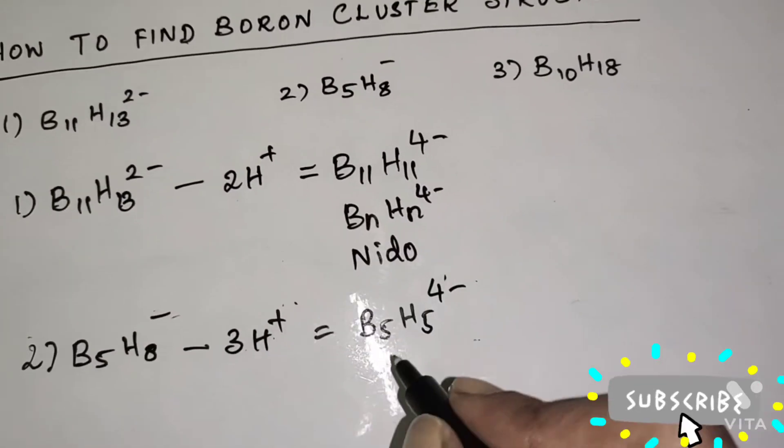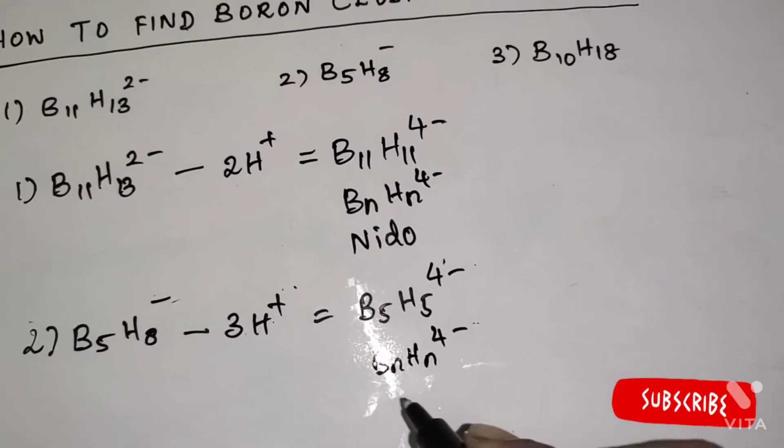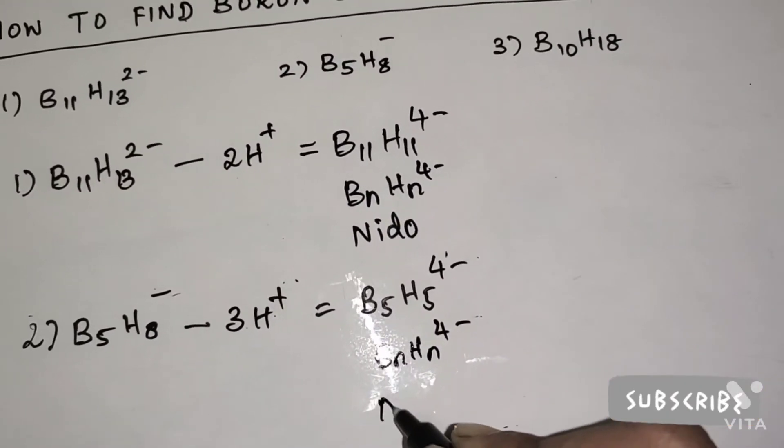Same as BnHn four minus. The cluster type is Nido.